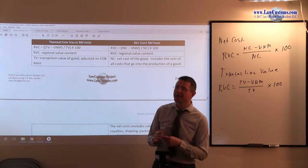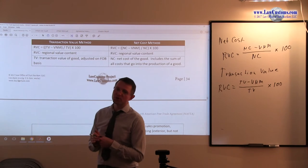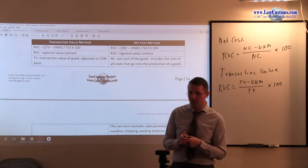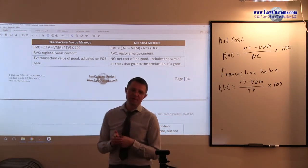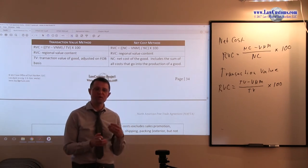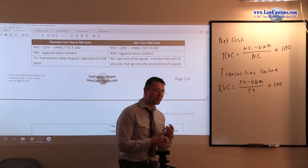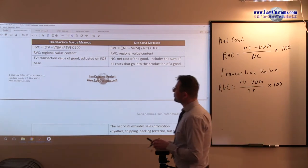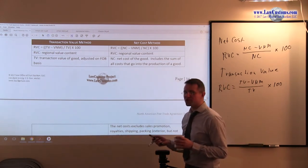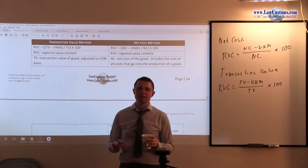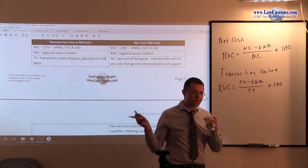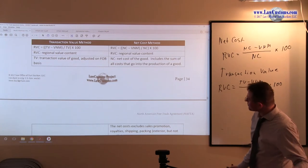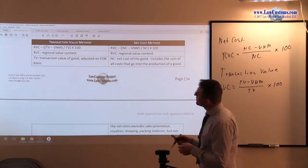We already saw, in a way, the regional value content requirement in the GSP and Israel and Jordan free trade agreements, where you have to have that 35% threshold of domestic material. The difference between the GSP, Jordan and Israel free trade agreements is that they do not require you to engage in this formula. They kind of say, alright, take the whole number and do the calculation that way. This one is a little bit more elaborate.